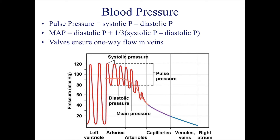Two other calculations are useful diagnostic tools: pulse pressure and mean arterial pressure, or MAP. Pulse pressure is calculated simply by subtracting the diastolic pressure from the systolic pressure, and tells us the difference between the two numbers. The mean arterial pressure tells us the average pressure in a patient's arteries during one cardiac cycle, and is calculated by adding the diastolic pressure to one third of the pulse pressure.